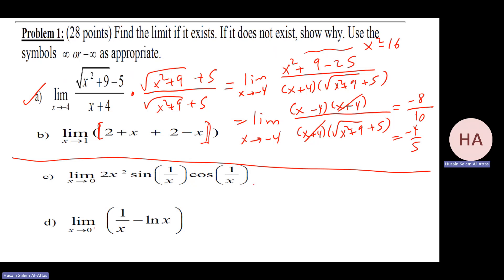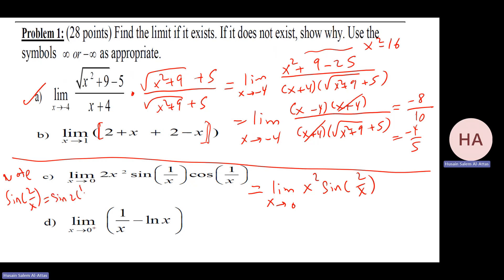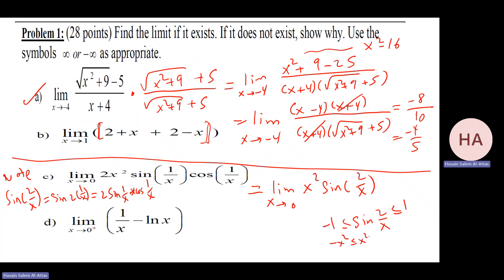This expression is x squared times sine of two over x. Note that sine of two over x equals sine of two times one over x, which by double angle is two sine of one over x times cosine of one over x. Using squeeze theorem: sine of two over x is between minus one and one. Multiply by x squared, a positive value. As x goes to zero, x squared goes to zero, so by squeeze theorem the limit equals zero.